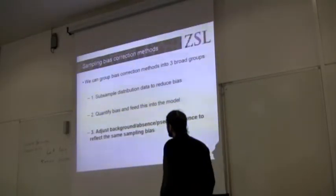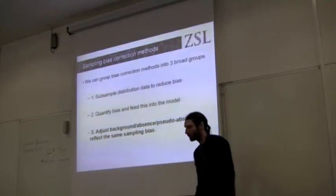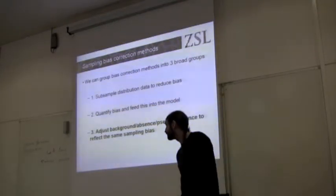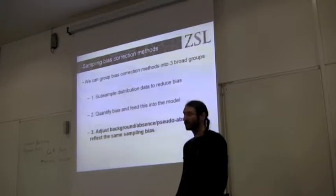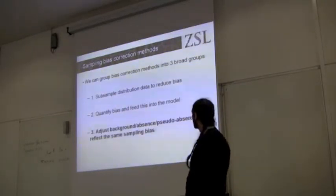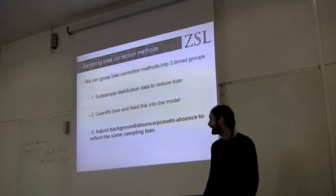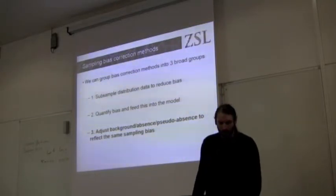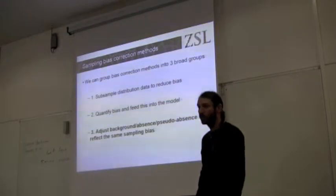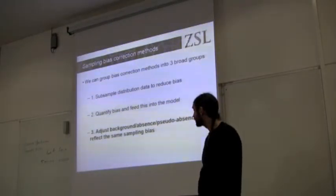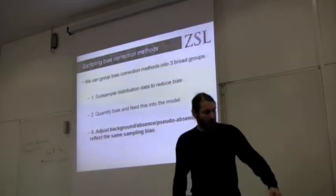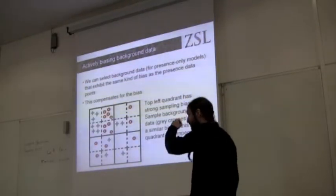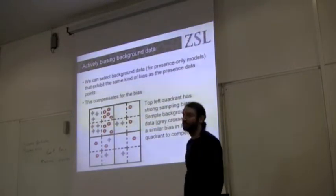And thirdly, perhaps the most common sampling bias methods now are to try to adjust your background or pseudo-absence data to reflect the same sampling bias as your observational data. There are a few studies by Phillips, and I've put them on the Dropbox, that do this and demonstrate that by adjusting your background data, you reduce the effect of sampling bias on your model.